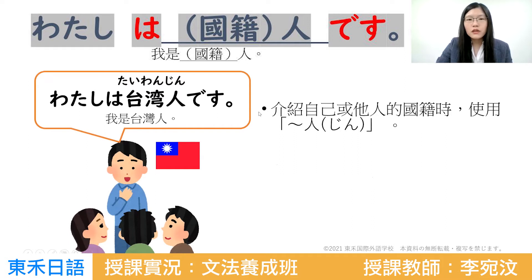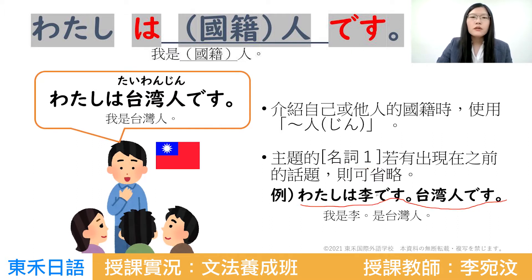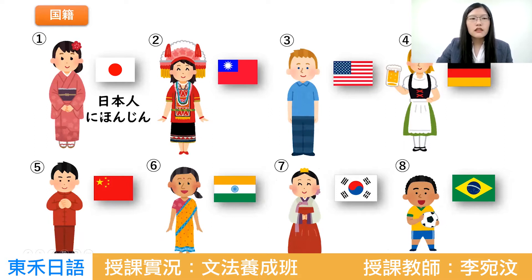介紹自己或是其他人的國籍的時候，要注意人的發音是「じん」，台湾人。另外，主題的名詞一如果有出現在之前的話題，就可以省略。私は李です，台湾人です，你就不用一直說私は。複習一下國籍念法：日本人、台湾人。